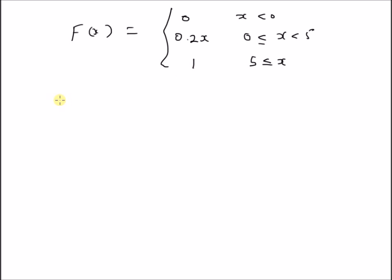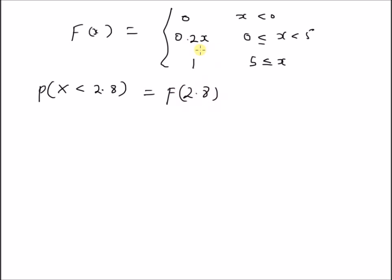Given this CDF, we want to find the probability of different types of intervals. For example, consider P(X < 2.8). The value 2.8 lies in the second interval (0 to 5), so the probability equals f(2.8) = 0.2 × 2.8 = 0.56.